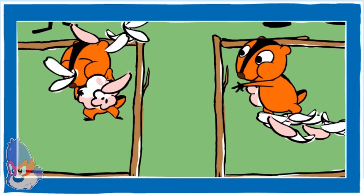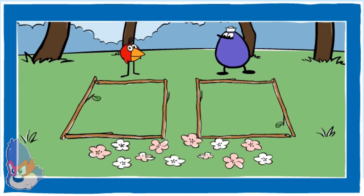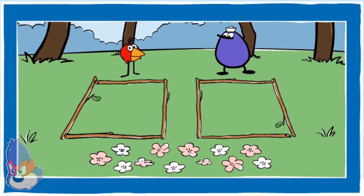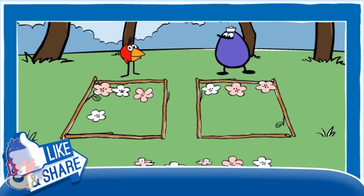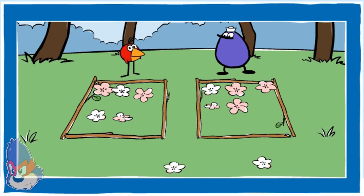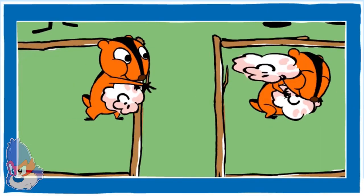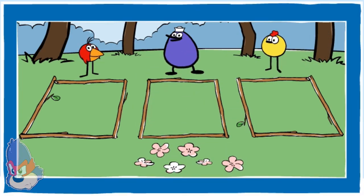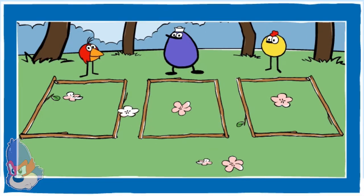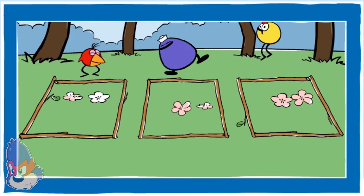What's a duck gotta do to keep his flowers? They need more help sharing flowers. Give Chirp and Quack the same number of flowers. You did it! They got the same amount! Oh, cherry blossoms! Can I have some too? Hey, Peep! Divide the flowers so that Chirp, Quack, and Peep have the same number. You did it! They got the same amount!